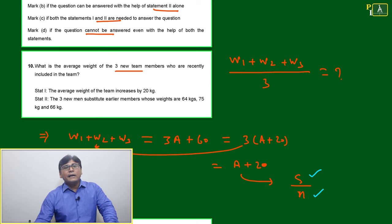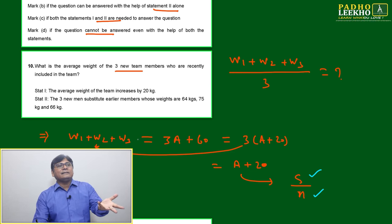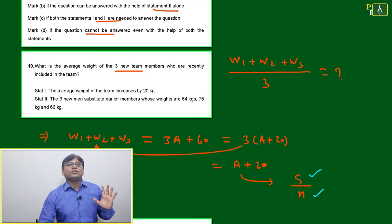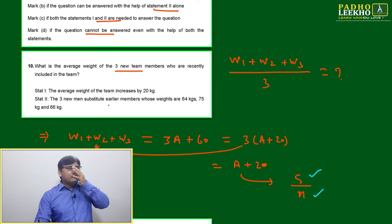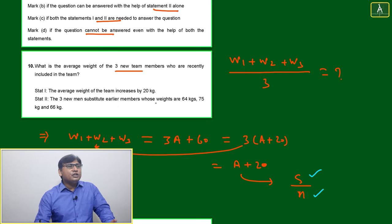How to calculate A? A will be equal to S divided by N. We don't know about the S, we don't know about the N. Total N, 3 is just added in that team. Means statement 1 for sure is not sufficient.